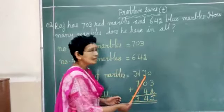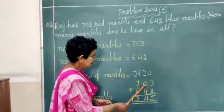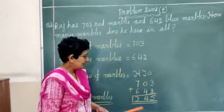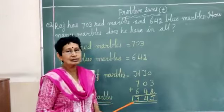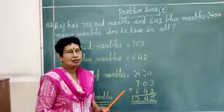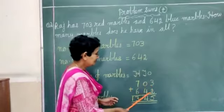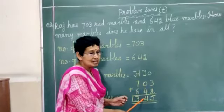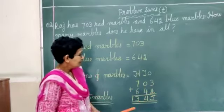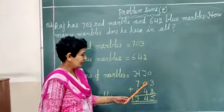Now come towards the tens side. 0 and 4. So 0 plus 4 is 0? Am I correct? No, I am wrong. 0 plus 4, the answer is the same number itself, that is 4. Now there also there is no carryover.